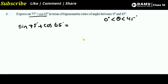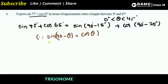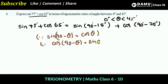The trigonometric ratios are sine, cosine, tangent, cosecant, secant, and cotangent. So sin75° we can write as sin(90° minus 15°), and cos65° we can write as cos(90° minus 25°). Using the formulas: sin(90 minus theta) equals cos(theta), and cos(90 minus theta) equals sin(theta).